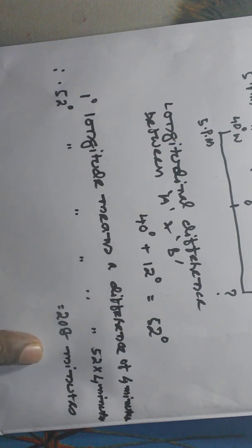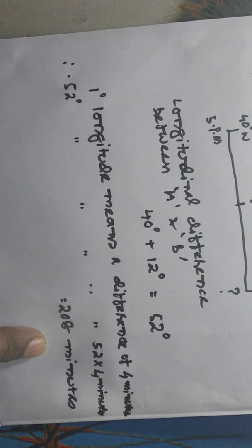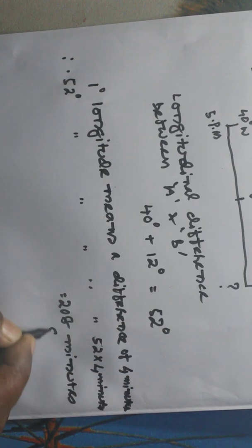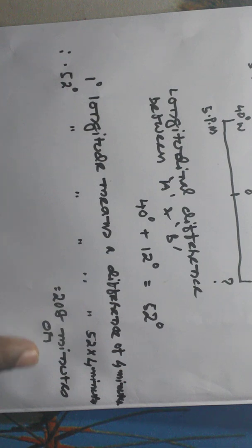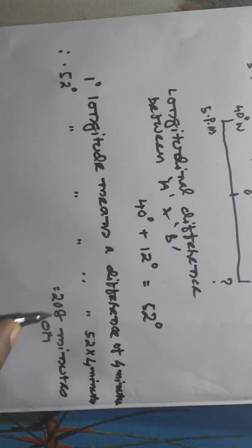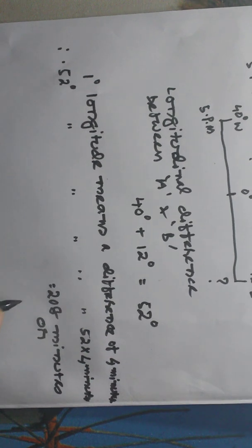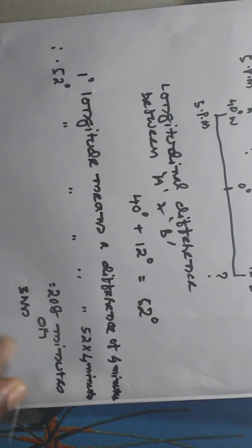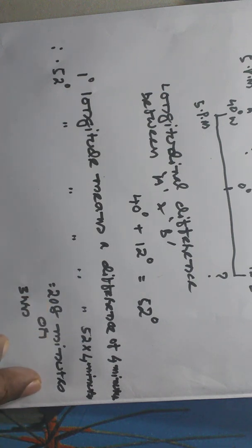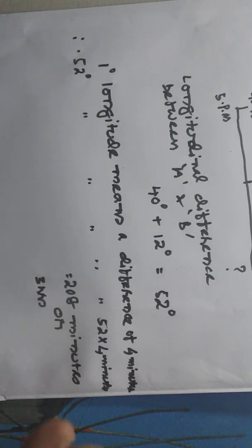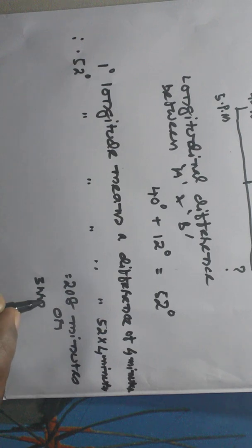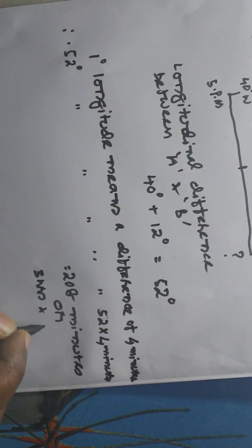Now this 208 minutes we need to convert into hours. You can do it simply: 208 divided by 60 will give you how many hours and minutes. You can do it in the rough — no need to show it on the front page. In this case it will be 3 hours and 28 minutes.